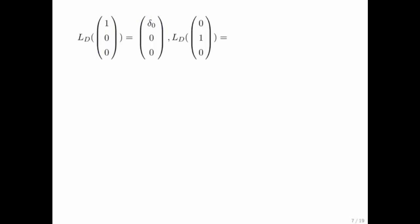In goes the second unit basis vector, out pops the vector 0, delta 1, 0. In goes the third unit basis vector, out pops the vector 0, 0, delta 2.